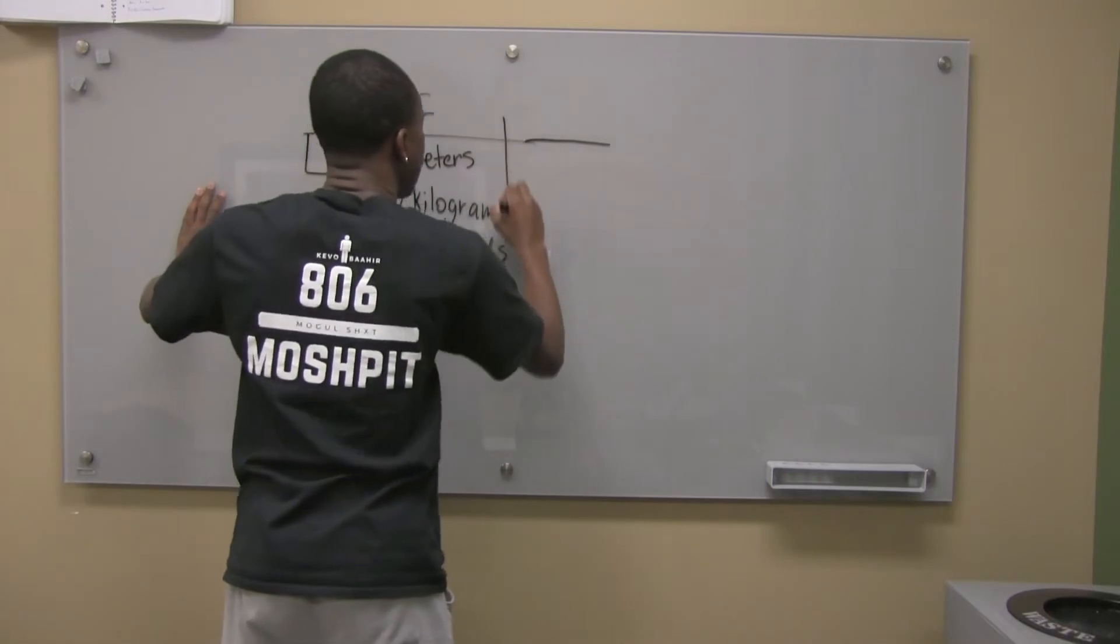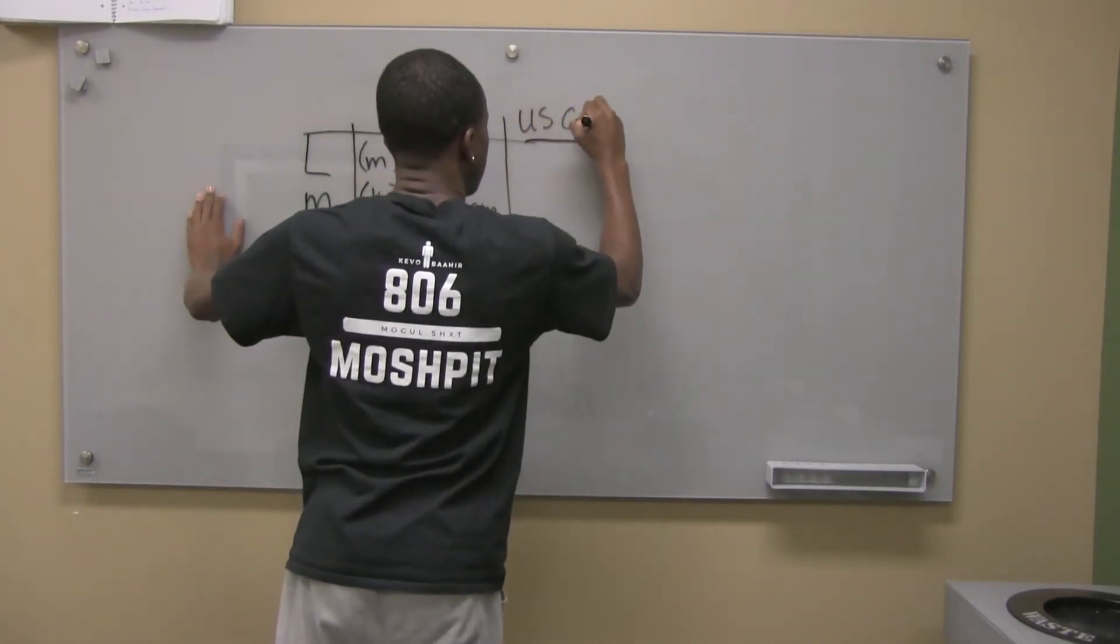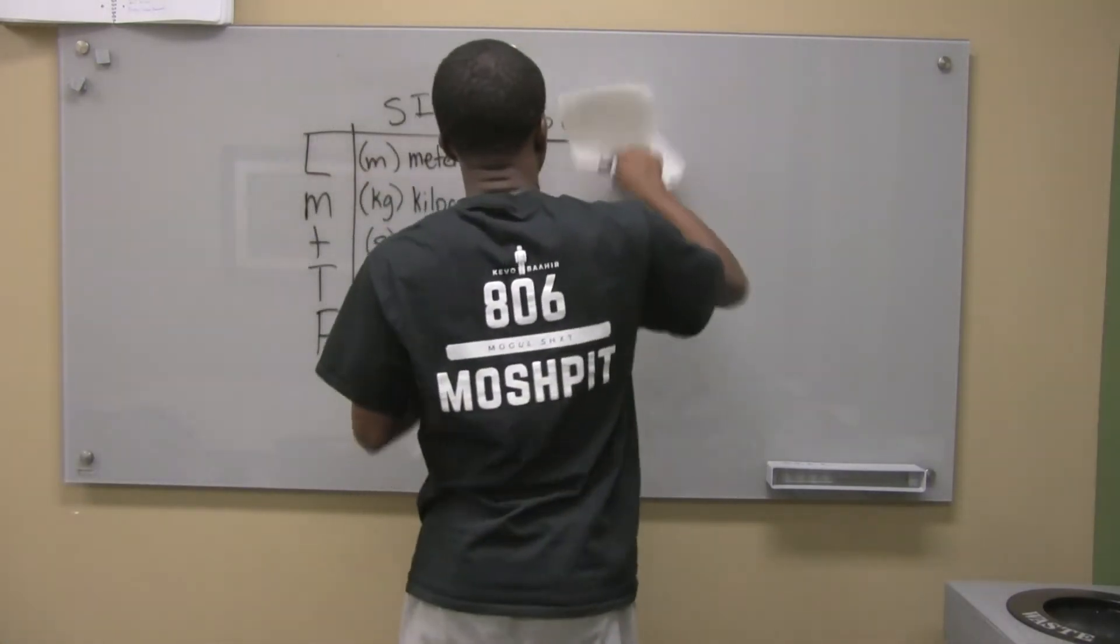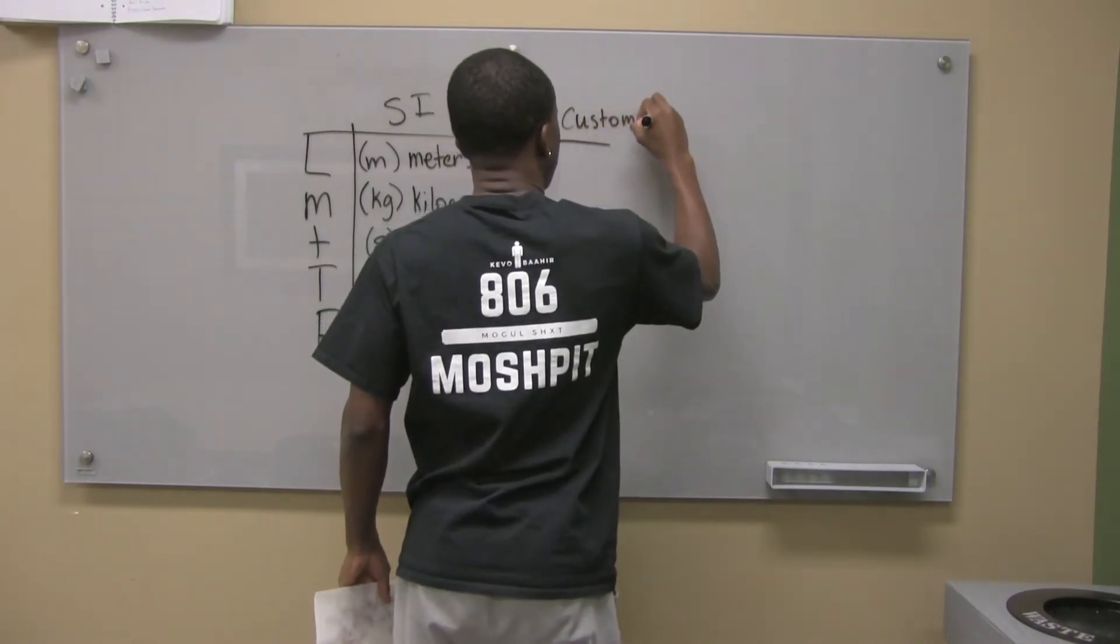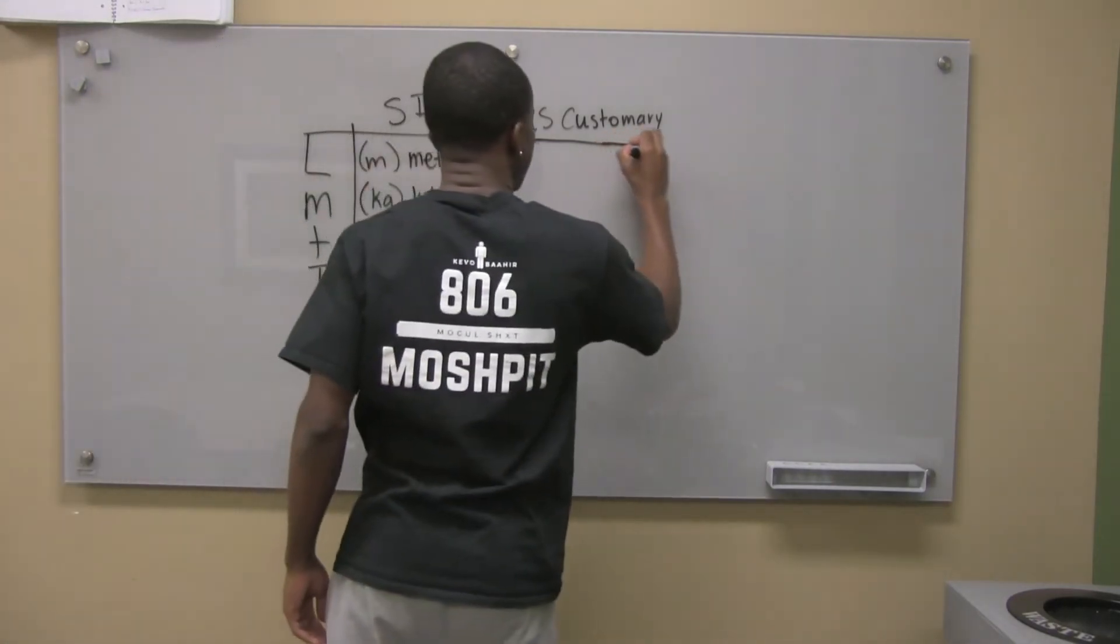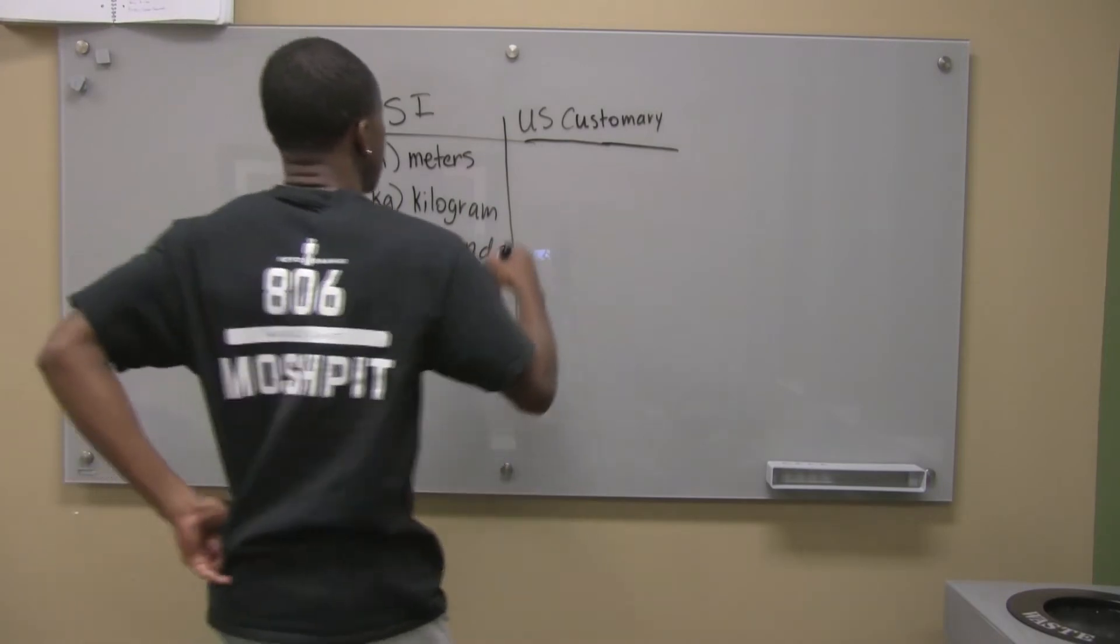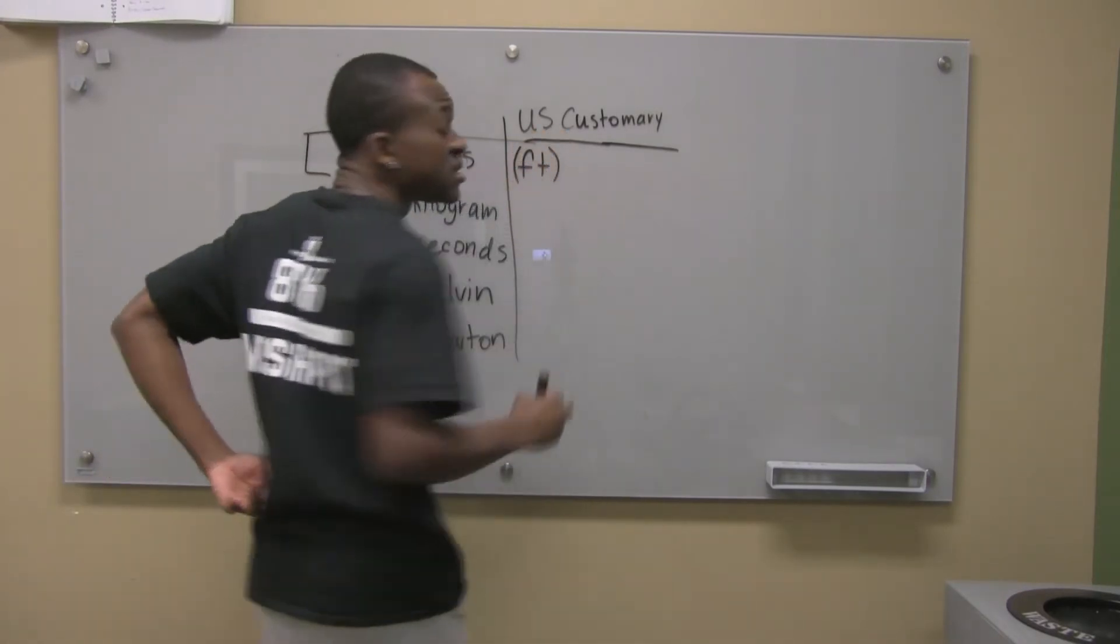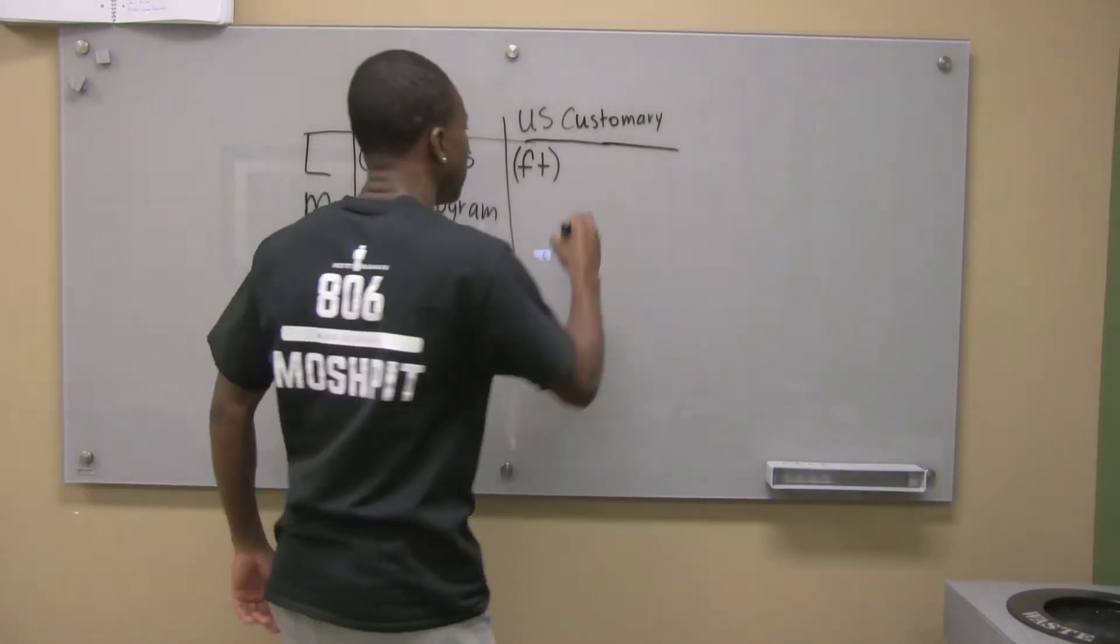We also have US customary. Now, in the US customary, it's a little bit different. So, in terms of length, we use feet. So you can denote that with this. Sometimes, you might see me denote feet with like an apostrophe, but it just means feet.